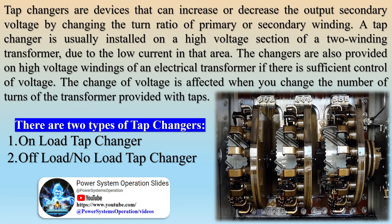Load tap changers are often employed with conservator type transformers but seldom with hermetic transformers. The amount an LTC can regulate the output voltage varies, although a typical range is plus or minus 10 percent of rated output voltage. For large distribution transformers, it is typical to have 16 taps above and 16 taps below the rated voltage.